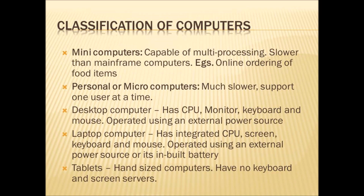Now we will see the important types of software. Software is a set of instructions that tells the computer what is to be done with the input data. It is known as a program. The types of software are system software, application software, and utility software.